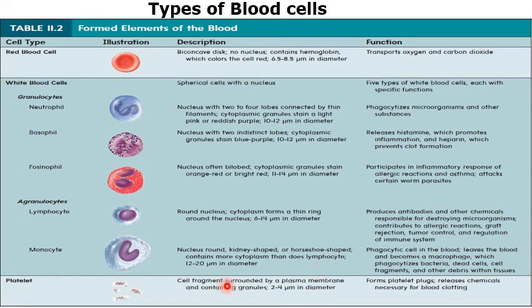Platelets are cell fragments surrounded by a plasma membrane and containing granules. They are 2 to 4 micrometers in diameter and are necessary for blood clotting purposes. So until now we have covered blood cells as part of our studies on stem cells. Thank you.